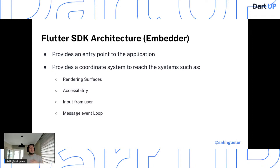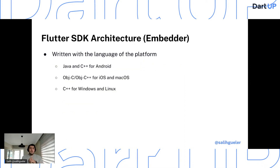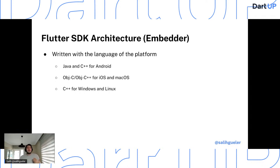The embedder is written with the language of the platform. For Android it uses Java and C++. For iOS and macOS it uses Objective-C and Objective-C++. For Windows and Linux it uses C++. The embedder is the native platform keeping the app working — it has all the native information we need and shows the app natively, providing information from the platform.